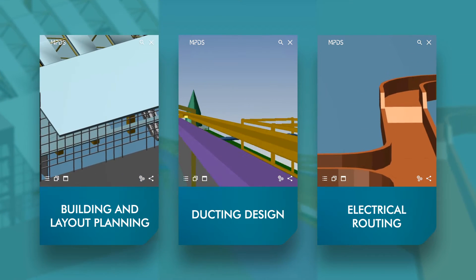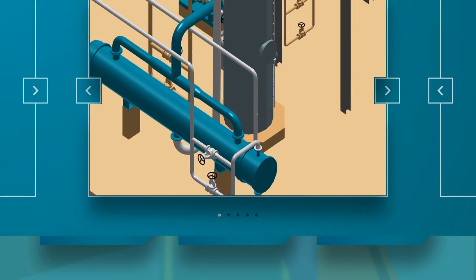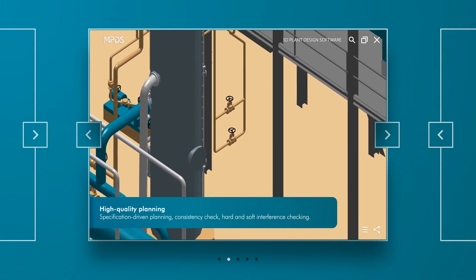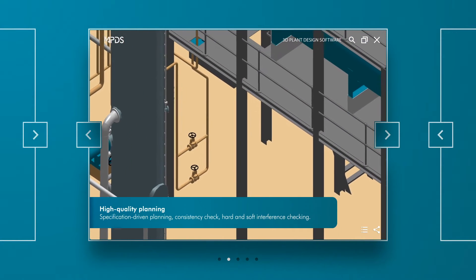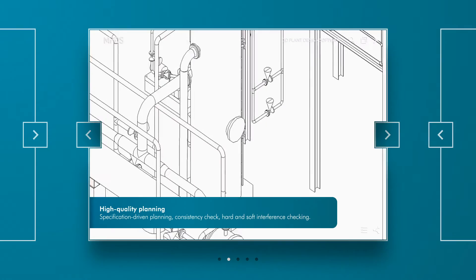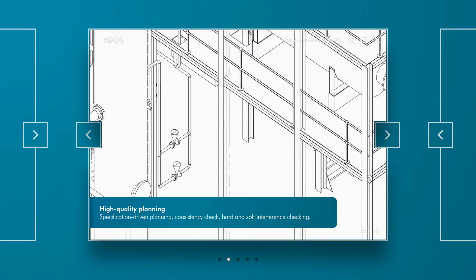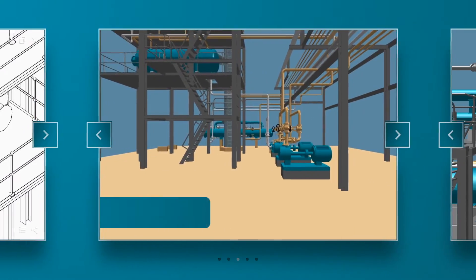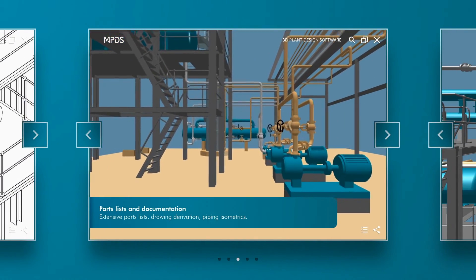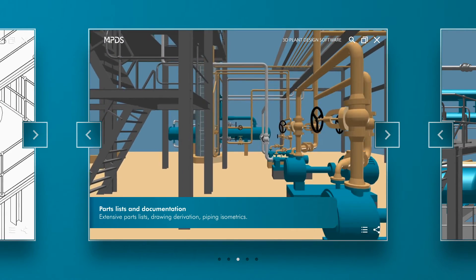Through the use of extensive catalog specifications, consistency checking, and clash detection, MPDS-4 ensures and preserves the high quality of your 3D designs.